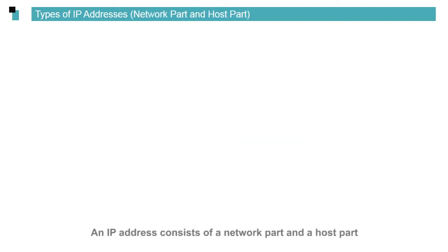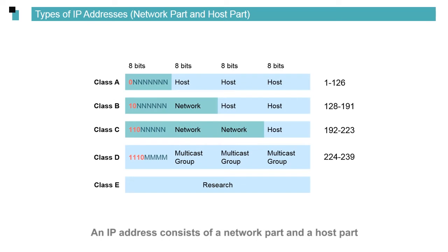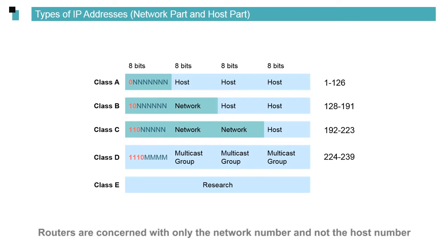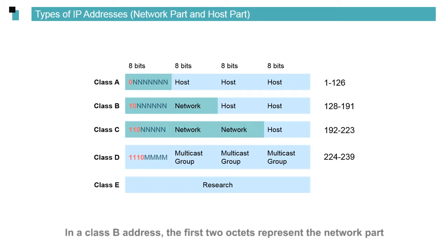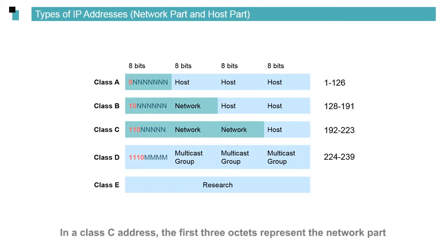An IP address consists of a network part and a host part. Routers are concerned with only the network number and not the host number. In the class A address, the first octet represents the network part and the remaining octets represent the host part. In the class B address, the first two octets represent the network part and the remaining two octets represent the host part. In a class C address, the first three octets represent the network part and the last octet represents the host part.